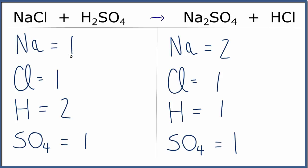Let's fix the sodiums. If we put a 2 as our coefficient in front of NaCl, that means we have 1 times 2, so we have two sodiums, and then 1 times 2 for the chlorines.